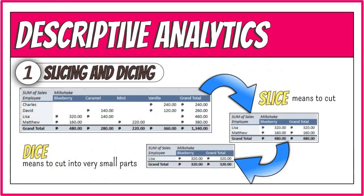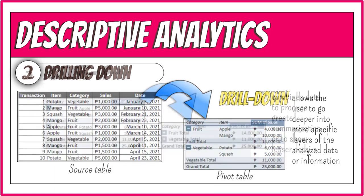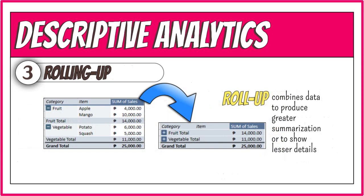To slice and dice is to break a body of information down into smaller parts, or to examine it from different viewpoints so that you can understand it better. To slice means to cut, and to dice means to cut into very small parts. Drill down is a capability that takes the user from a more general view of the data to a more specific one at the click of a mouse, allowing the user to go deeper into more specific layers of the analyzed data. Roll-up, on the other hand, performs a combination of data to produce greater summarization or to show lesser details.